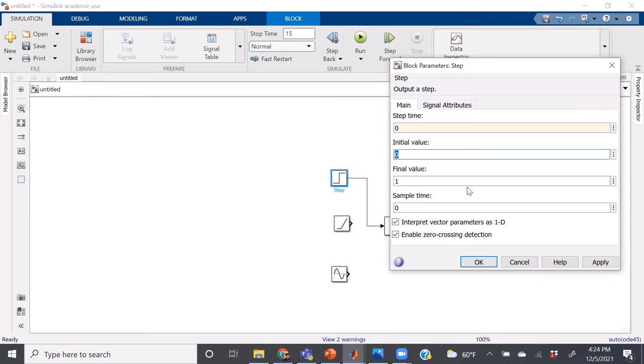And the final value is what value the step changes to. For example, our unit step steps to a value of one. We'll pretend like we're doing a unit step here, so we'll keep this as one.